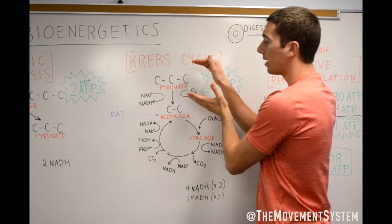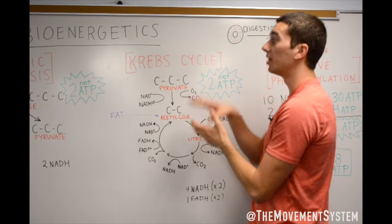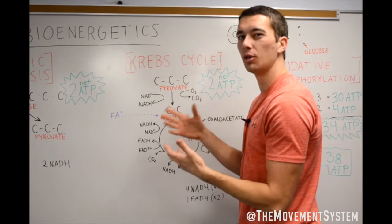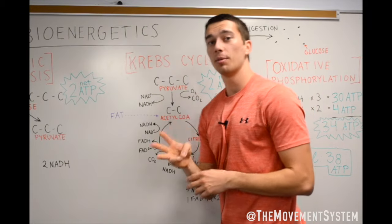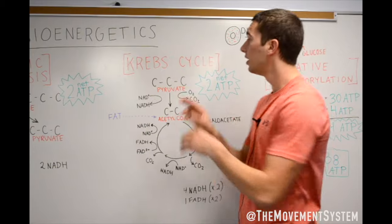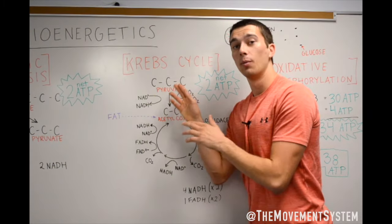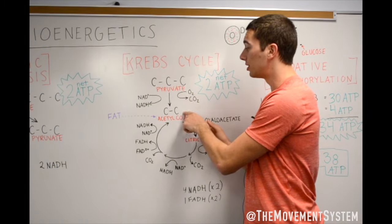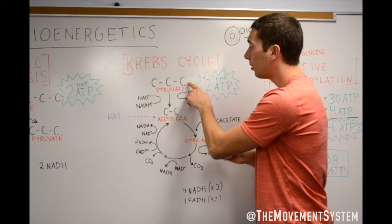It's debatable whether the pyruvate to acetyl-CoA is within the Krebs cycle, but we're going to include it because most textbooks do. Pyruvate is that three-carbon molecule. It's half of a glucose. So glycolysis cut it in half. Now you have pyruvate, and we're going to break that down into acetyl-CoA.